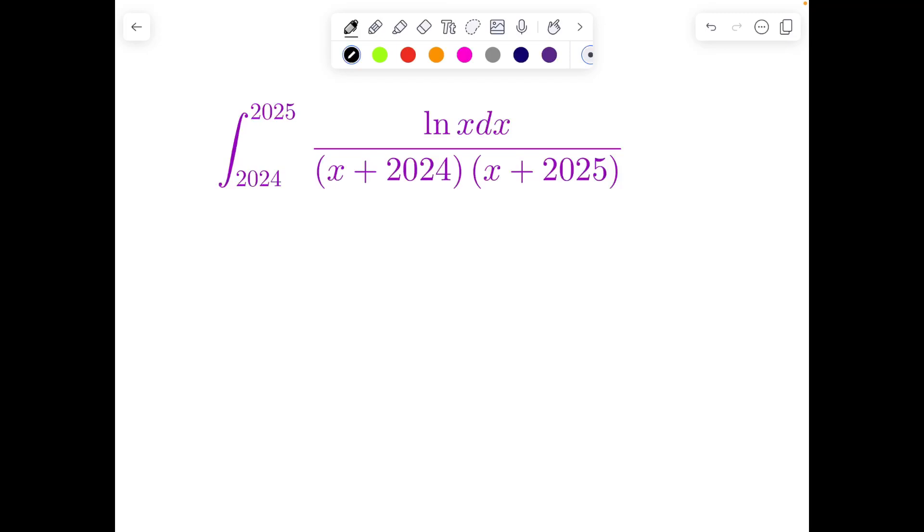All of you, here is an interesting problem designed for Jayman's April session. Let's see how to solve this problem. As you can clearly see, the integration runs from 2024 to 2025 and we have ln x in the denominator with a linear expression. We need to kill this ln x because it will create a traumatic experience if it remains in the system.